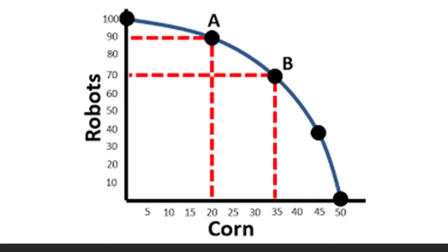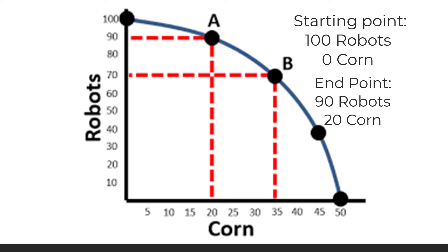Points A and B show different combinations. With point A, we have 90 robots and 20 corn. We can use this to demonstrate opportunity cost. If I ask what is the opportunity cost of going from 100 robots and zero corn to point A — we know we had to give up something to gain something else, and what we gave up is our opportunity cost. In order to gain 20 corn, we lose 10 robots. So the opportunity cost of moving to point A is 10 robots.